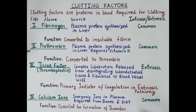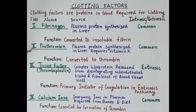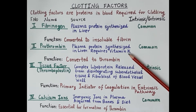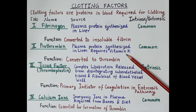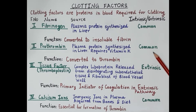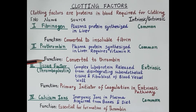The second clotting factor is prothrombin. Prothrombin is also a plasma protein synthesized in the liver. Importantly, the synthesis of prothrombin requires vitamin K. Prothrombin is common for both the intrinsic and extrinsic pathways. Its function is that prothrombin is converted to thrombin, and thrombin in turn converts fibrinogen to fibrin.